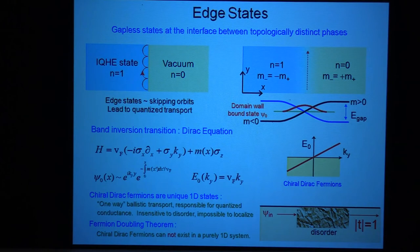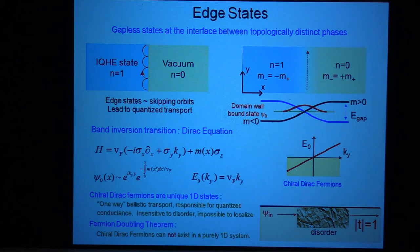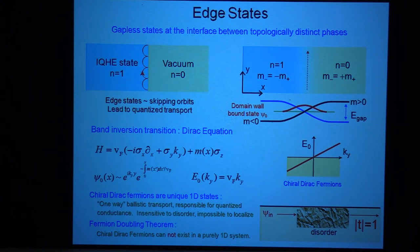The zero mode state that you get then turns into this chiral Dirac fermion mode that has a uniform velocity. This zero mode that you get is going to be an eigenstate of sigma y. When you solve for the zero mode as a function of x, that zero mode is an eigenstate of sigma y, and so therefore you can see that its energy is just going to be linear in ky. These edge states are wonderful and magical because they only go in one direction — they're sort of like one-way streets.